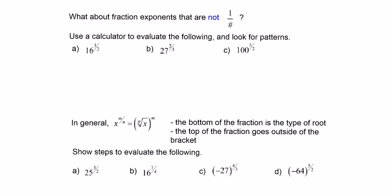The next part of the lesson: what would happen if our exponents don't look like 1 over some number? Here's the big hint — 1 half times 3 is the same as 1 half times 3 over 1, and 3 over 1 times 1 half gives us 3 over 2. Based on this, we're going to use the power of a power rule for exponents.